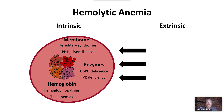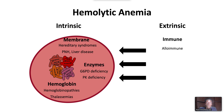Factors extrinsic to the red blood cell include immune and non-immune or mechanical causes. Immune causes can be alloimmune, as occurs with hemolytic disease of the fetus and newborn. It could be autoimmune, as occurs with autoimmune hemolytic anemia and cold agglutinin disease, or could be mediated by drugs and/or medications.